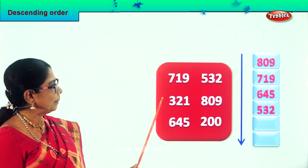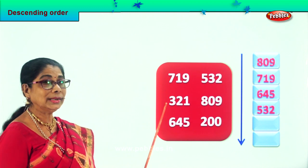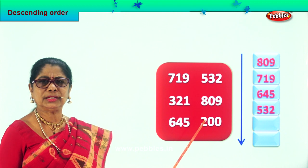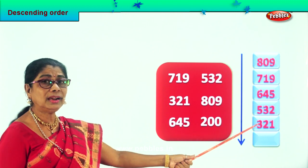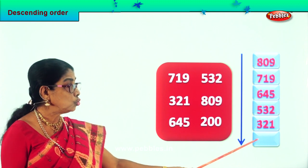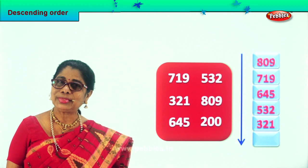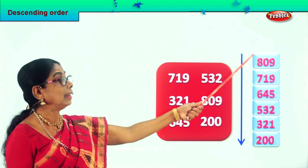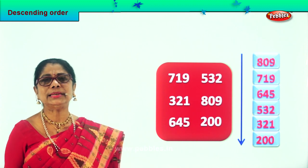Very good. We are left with just two numbers here. One is two hundred, one is three hundred twenty-one. So which one shall we put? Good. Three hundred twenty-one will go here. And finally we have the last smallest number, two hundred, which goes over here. Did you enjoy putting the smallest and the biggest over there? We arrange the numbers in descending order.